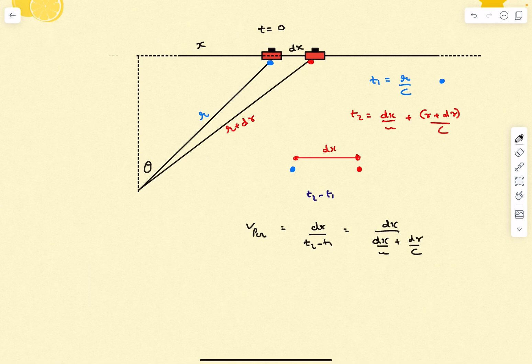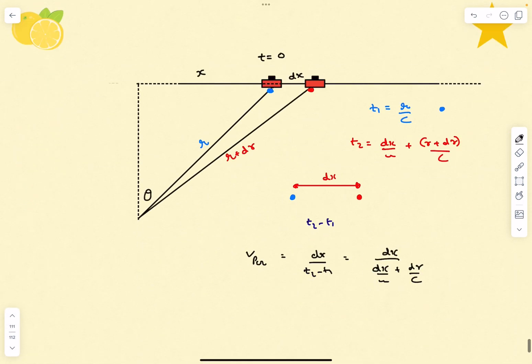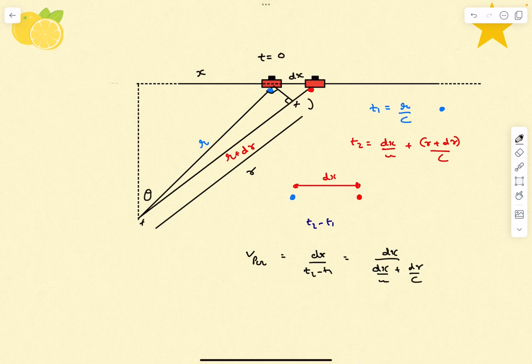Now how do we relate dx with dr? For that we can just simply drop a perpendicular over here. I can consider this distance as roughly r.